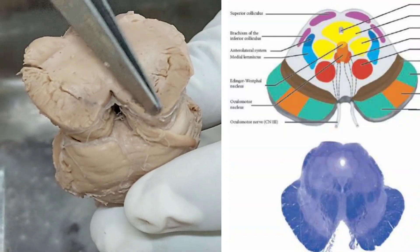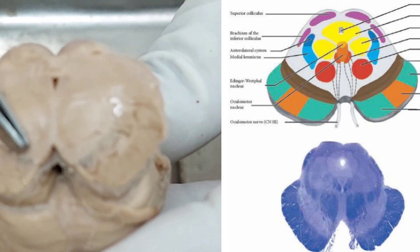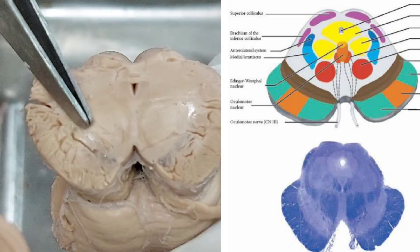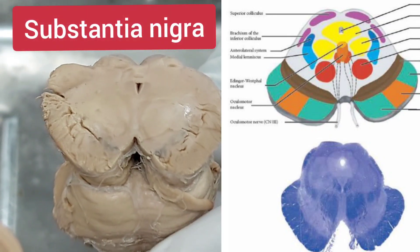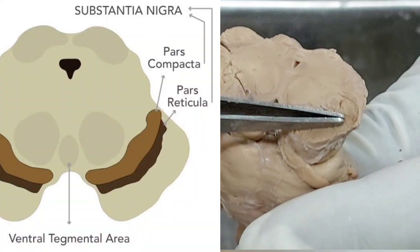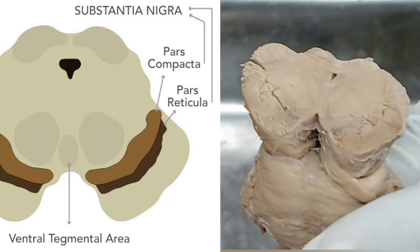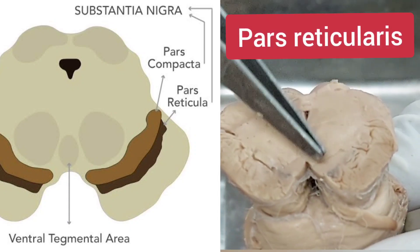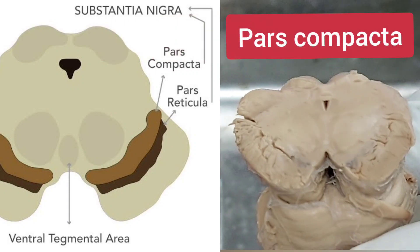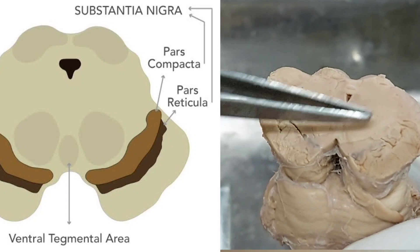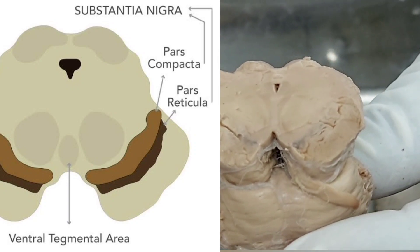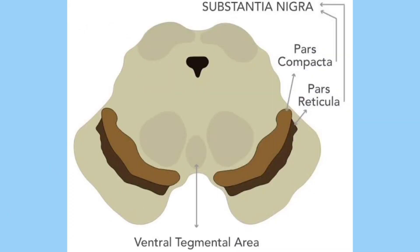Just behind the crus cerebri you can see a pigmented area — that pigmented area is called the substantia nigra. This structure has two parts: one ventral part and one dorsal part. The ventral part is a cell-poor zone called the pars reticularis. The dorsal part is the compact part, a cell-rich zone, and its pigmentation is due to the melanin pigment. The ventral part or pars reticularis is rich in iron pigment. Besides these two parts — pars reticularis and pars compacta — there may be another small part called the pars lateralis.